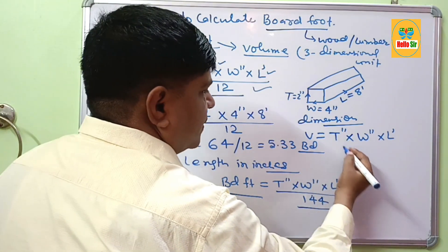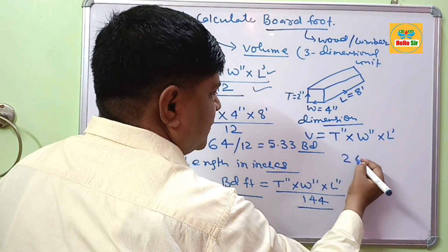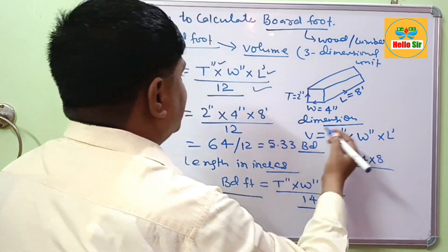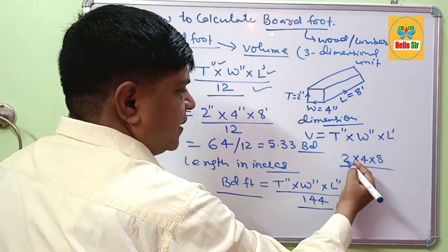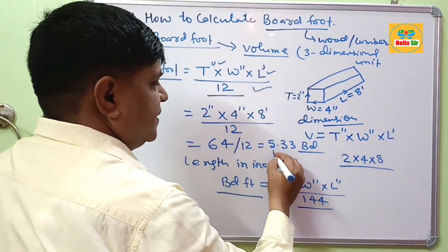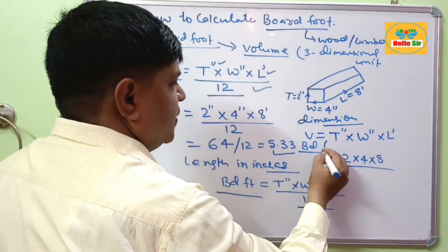You have the question, suppose the wood dimension is 2-4-8. How many board feet? In this log of wood, your answer is 5.33 board feet.